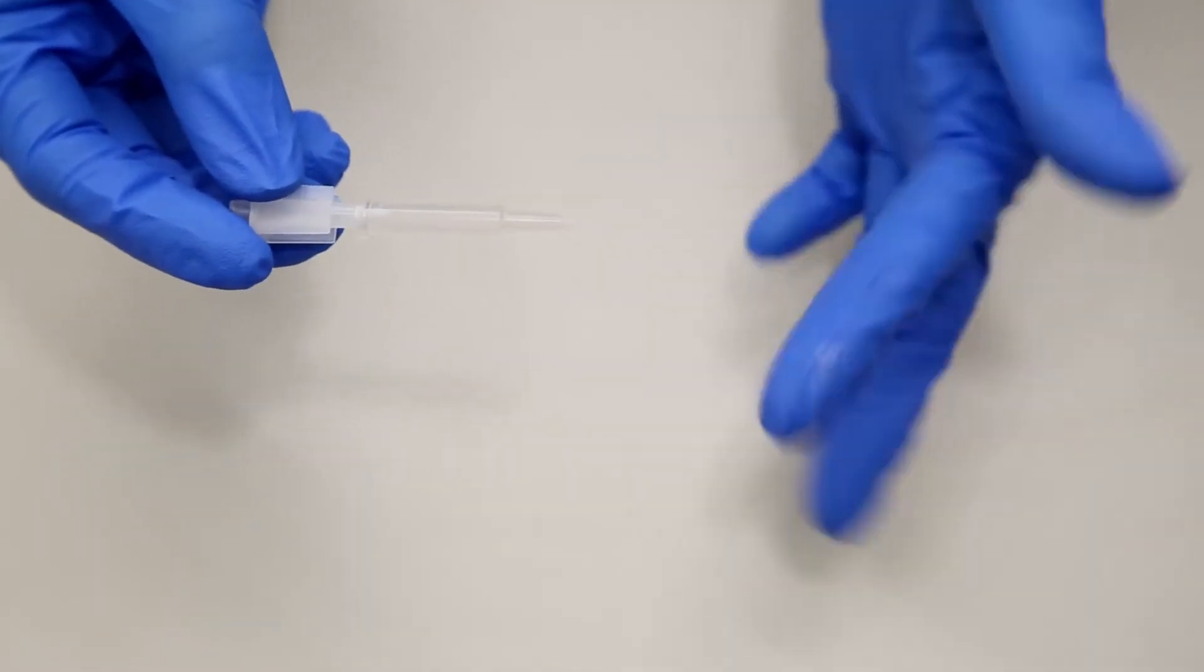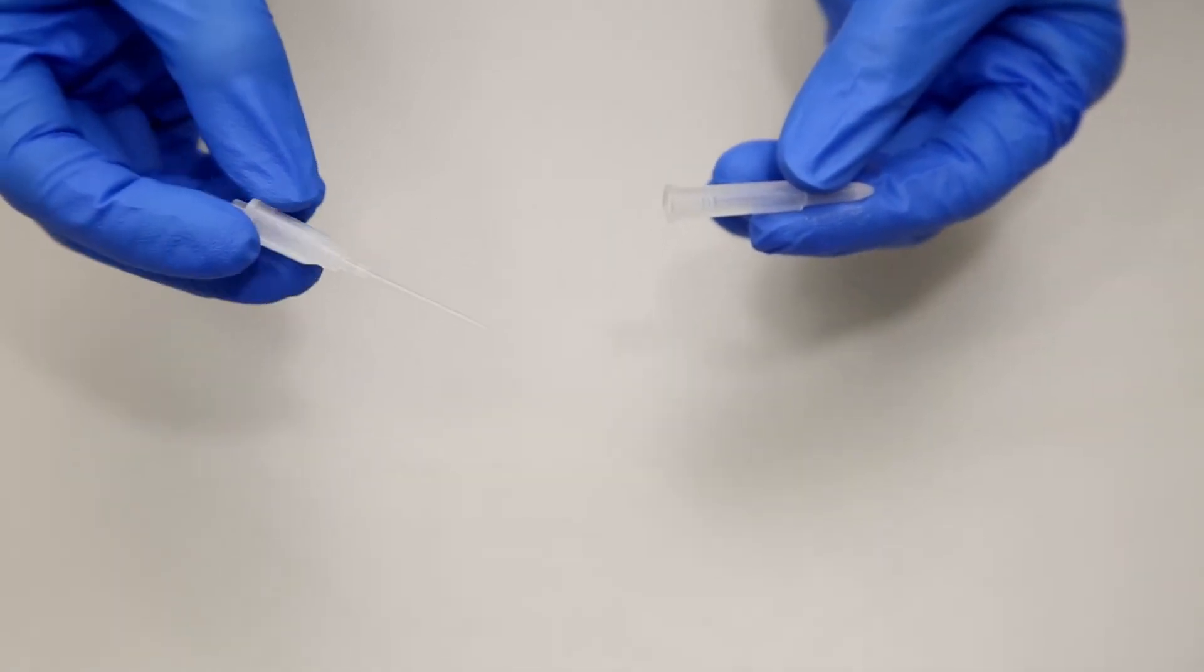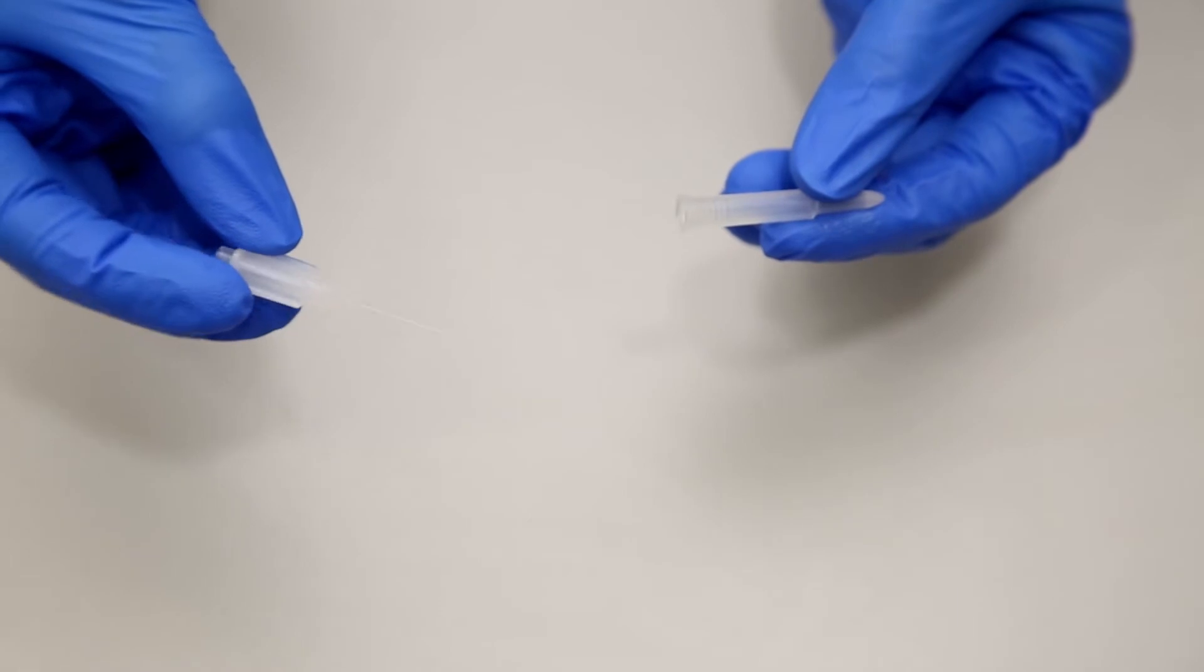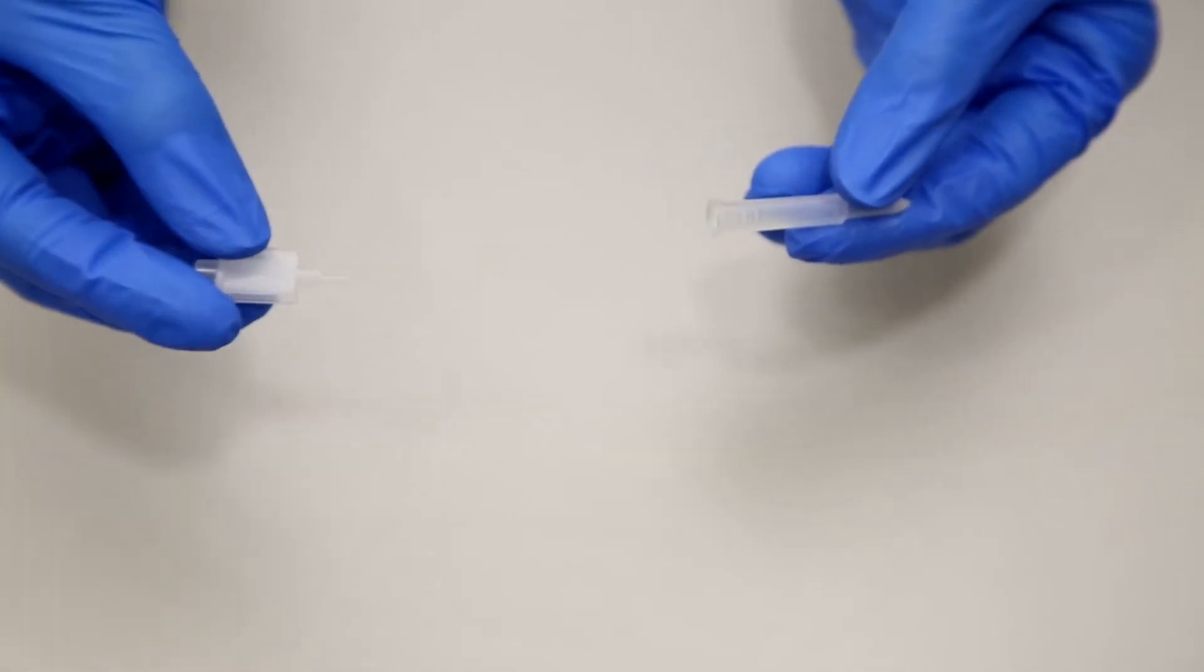The pipet is self-filling and contains 20 microliters of fluid. The pipet shield is used to puncture the reservoir diaphragm just before use and to protect the pipet.